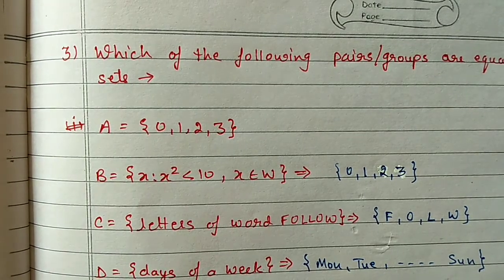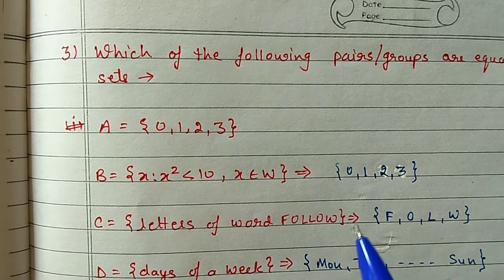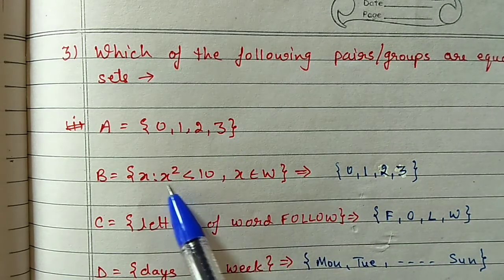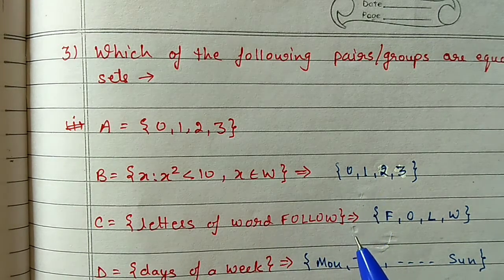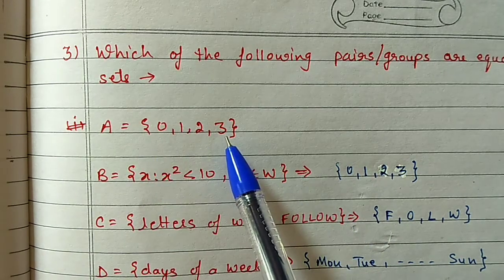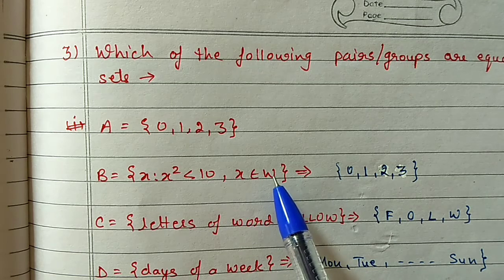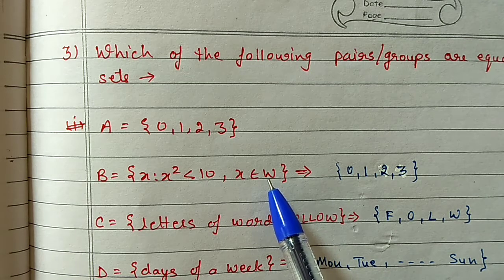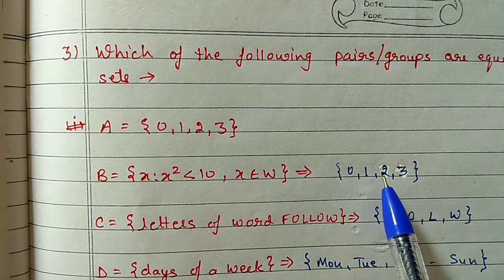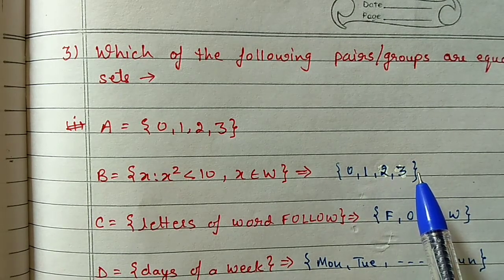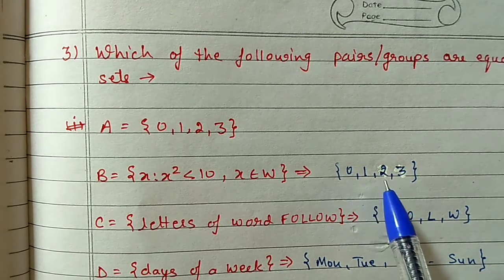Question 3: Which of the following pairs or groups are equal sets? We first convert all sets to tabular form and then compare. Set A is already in tabular form: {0, 1, 2, 3}. Set B is {x such that x² < 10 and x is a whole number}: 0² = 0, 1² = 1, 2² = 4, 3² = 9 - all less than 10. 4² = 16 which exceeds 10, so B = {0, 1, 2, 3}. Set C is the letters of the word 'follow': F, O, L, W (O and L repeat but we write each once).